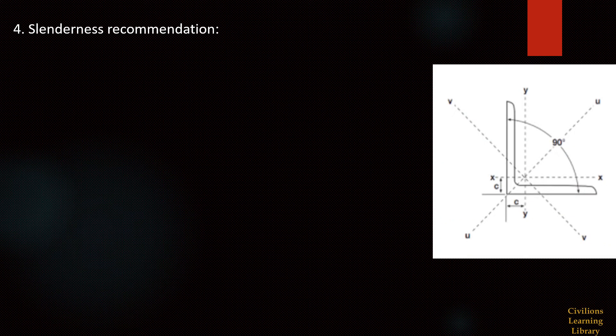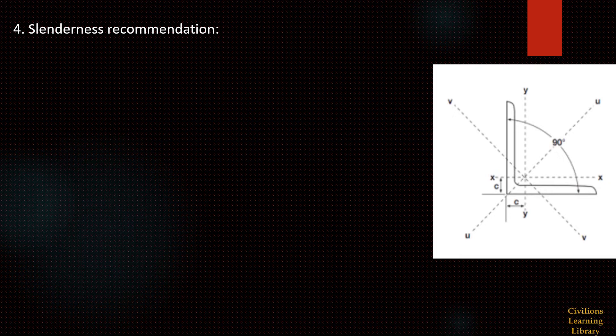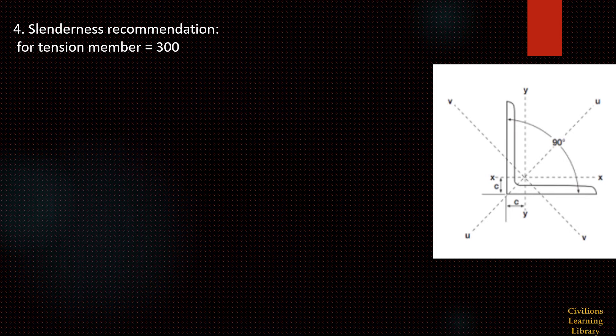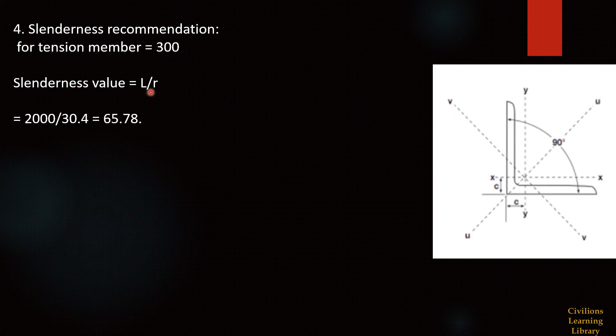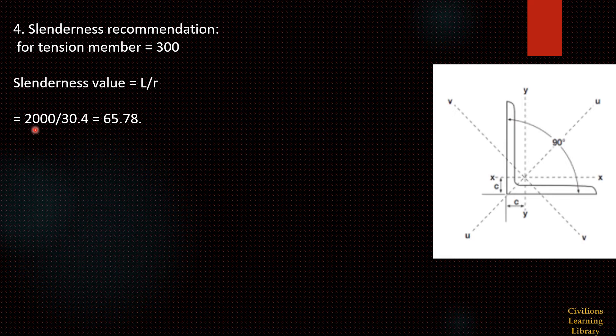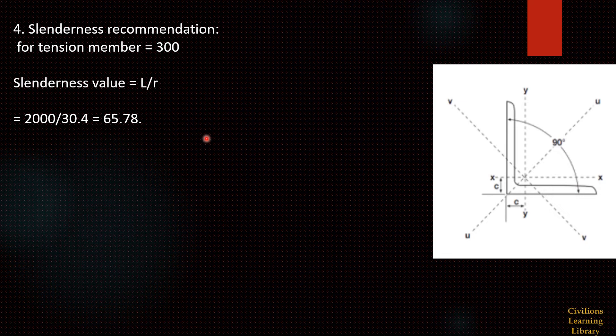Code is recommending slenderness value also for tension members. For tension members the recommended value is 300. The formula for slenderness value is effective length by radius of gyration. For 100 by 100 by 10 angle the radius of gyration value is 30.4 mm. Our length is 2 meter. We are getting the value 65.78 which is less than 300. Hence it is satisfying the slenderness also.